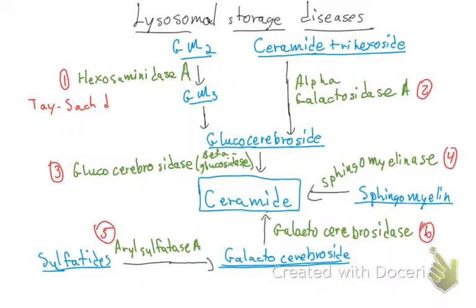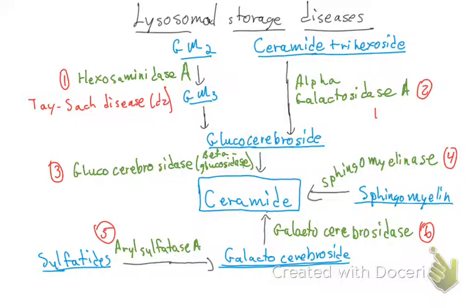The first disease: if a patient lacks hexosaminidase A, they cannot convert GM2 to GM3, and they will develop Tay-Sachs disease. Tay-Sachs presents with progressive neurodegeneration, developmental delay, and a cherry-red macula. There are lysosomal changes visible on examination, but notably Tay-Sachs does NOT have hepatosplenomegaly. The substrate that accumulates is GM2 ganglioside. This disease is autosomal recessive.